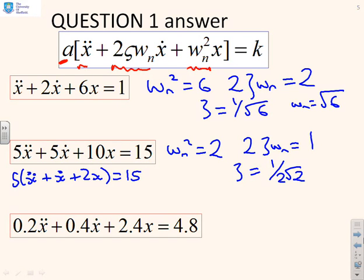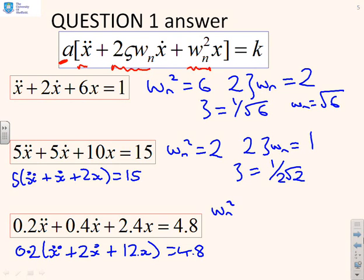And with this final one, again, you'll see I need to rearrange it a bit. So, take the 0.2 outside and I get ẍ + 2ẋ + 12x = 4.8. So, now, again, I can see straight away that ω_n squared equals 12, and 2ζω_n equals 2, which gives me that ζ equals 1 over root 12.